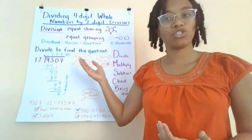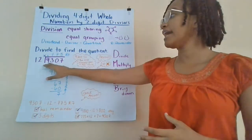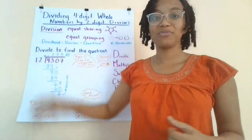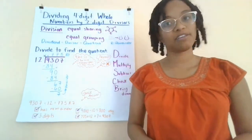So now let's try an example to practice the division process. Divide to find the quotient. In this problem, we're going to divide 9,307 by the number 12. We should all know our 12 times tables, so that should be pretty easy for us.